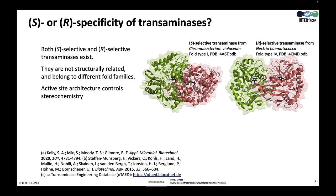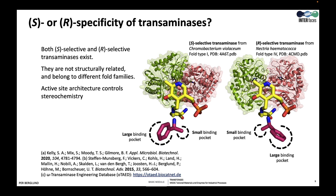To the right is an example of an R-selective ATA from the microbe Nectria hematococca. The R-selective ATAs belong to the fold type 4 family. It is the active site architecture that controls the stereochemistry, and a very simple model can be used to explain this. We can see the coenzyme PLP and an amine coordinated in both enzymes, with binding pockets in the enzyme active site — the small and the large binding pockets. When we compare this architecture in both enzymes, we see that the active sites are mirror images of each other. It is possible to turn an S-selective enzyme into an R-selective one and vice versa with protein engineering that reduces the large binding pocket and enlarges the small one.